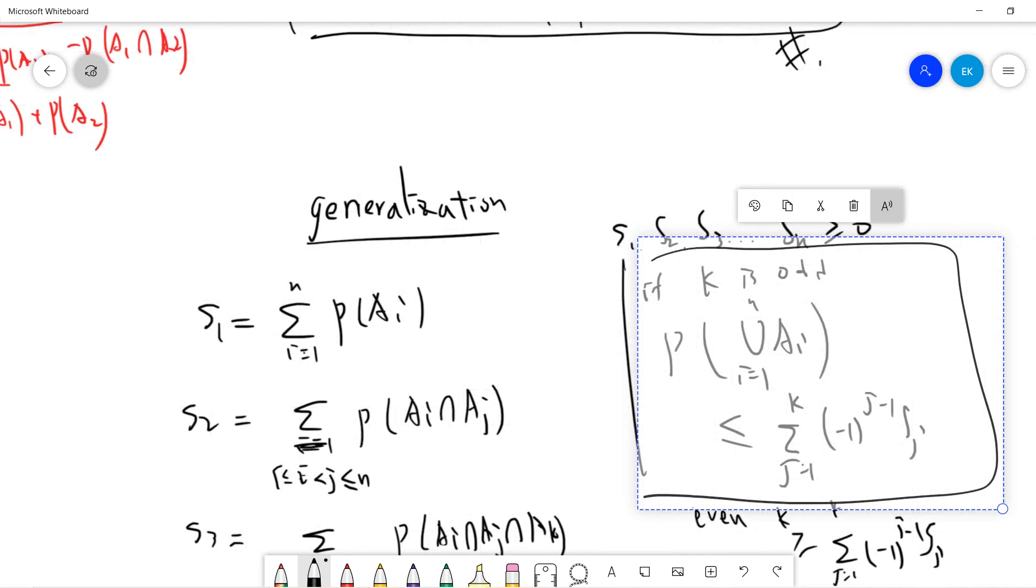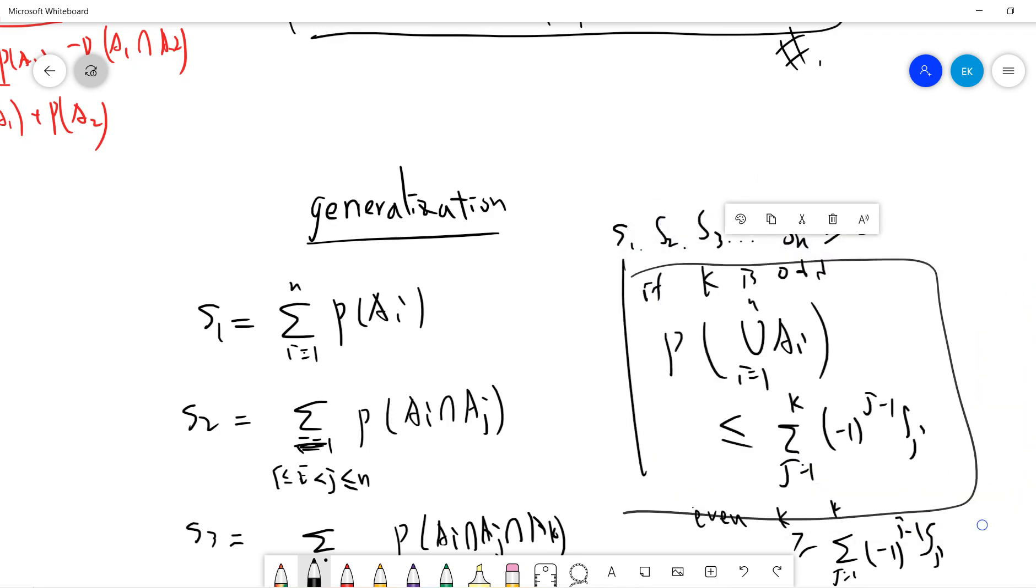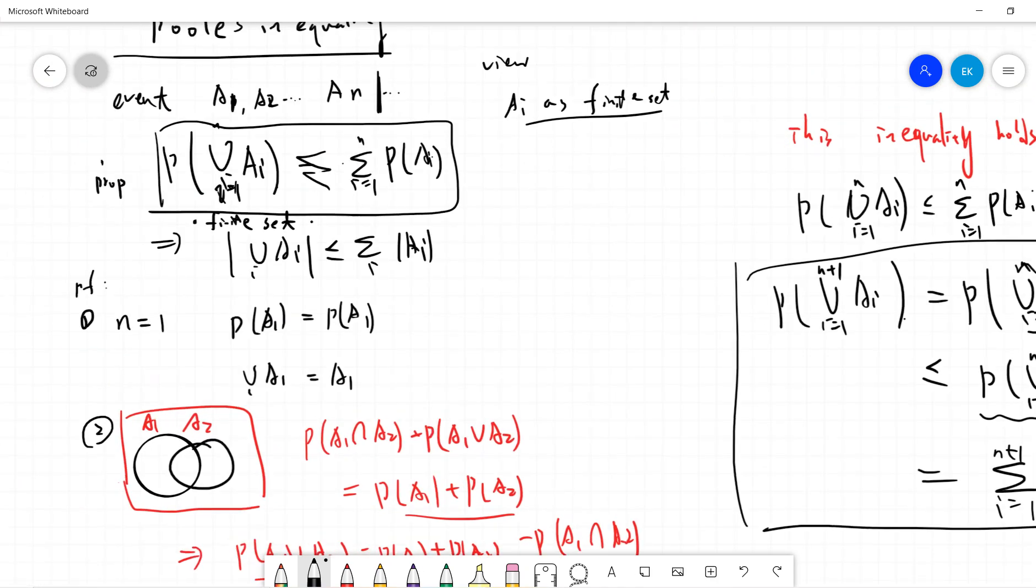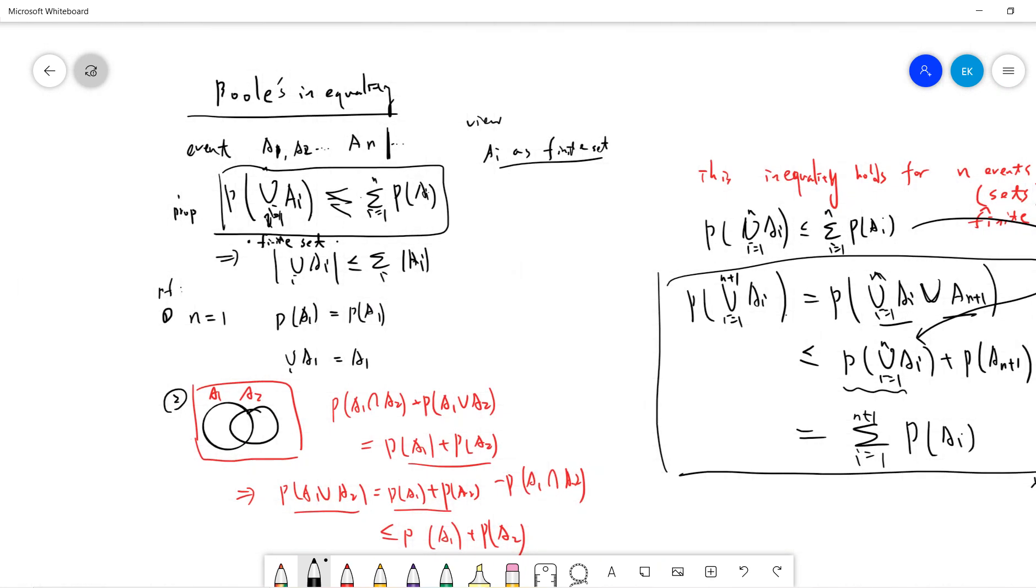So this is just a small video about a very common identity, Boole's inequality, in probability. I will see you guys in the next probability videos. Be sure to subscribe to my channel, thanks.